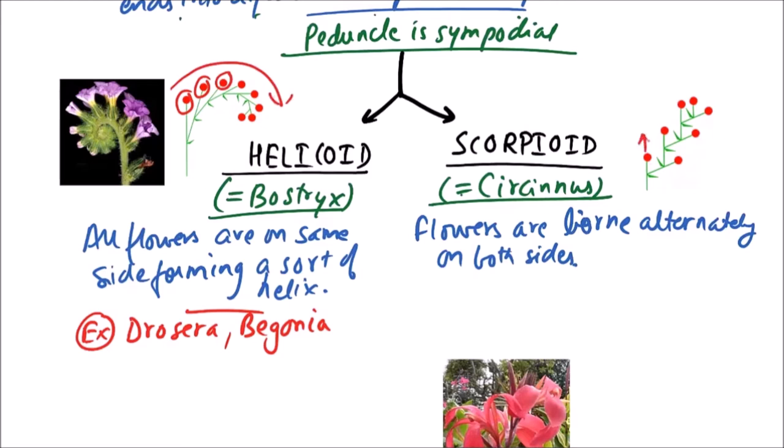While in scorpioid, one flower goes in this way, another goes in that way. So alternately flowers are growing.